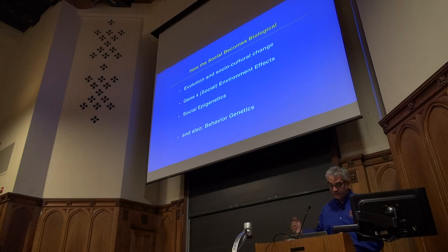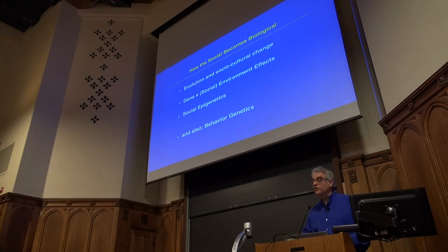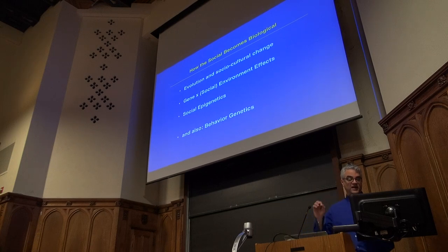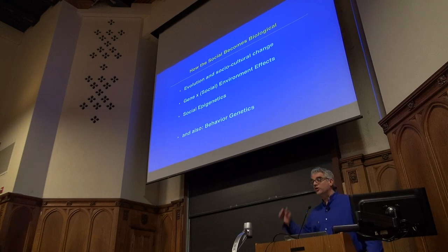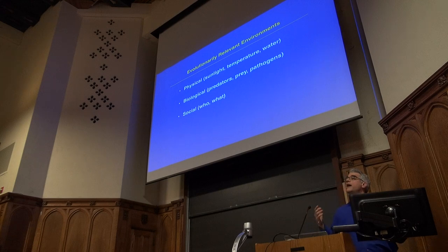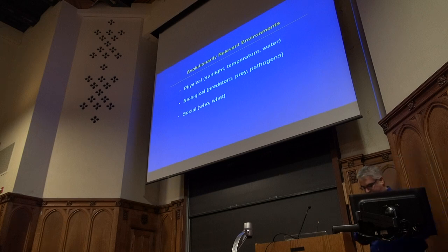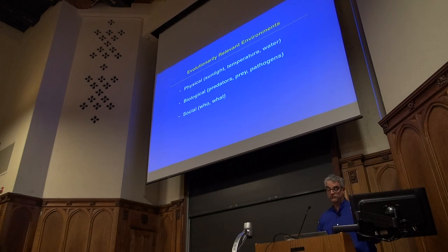We're going to consider how the biological can become social, specifically insofar as social phenotypes and behaviors are encoded in our genes — a phenomenon known as behavior genetics. We'll cover evolution and sociocultural change, gene-by-environment interactions, and behavior genetics today, and social epigenetics next time. Ordinarily, human beings are seen as evolving under environmental pressures of different sorts, and they face these pressures over vastly different timescales.